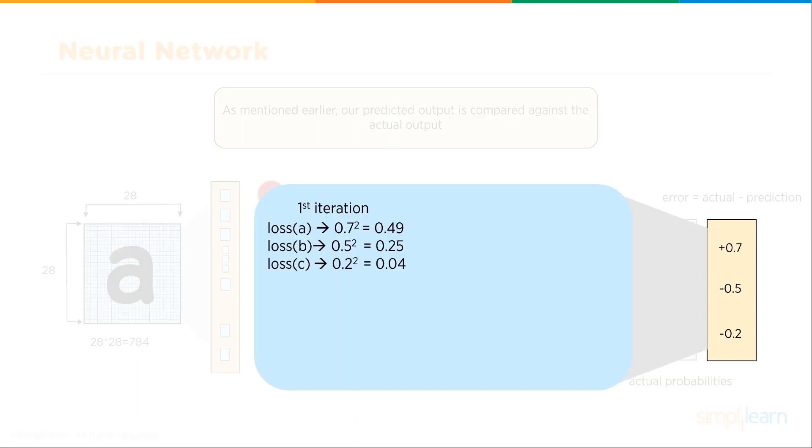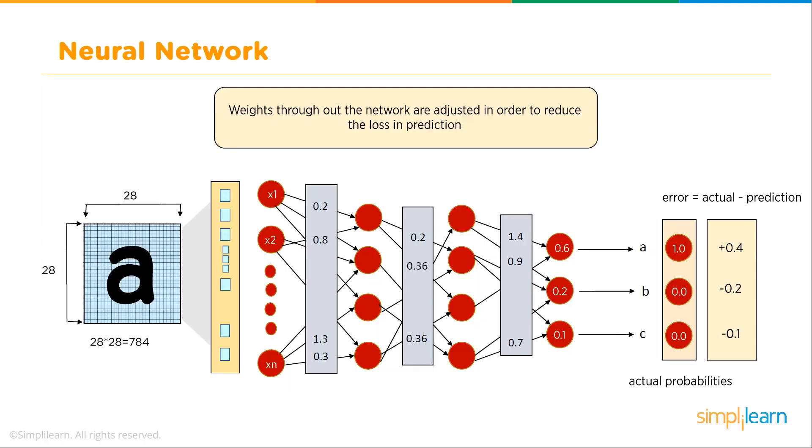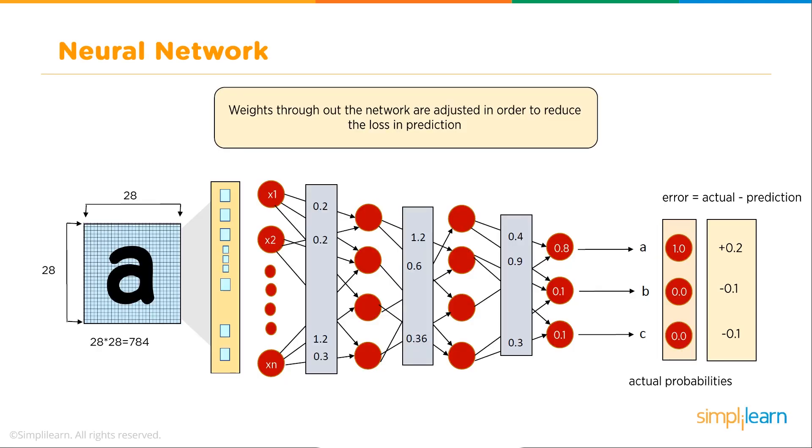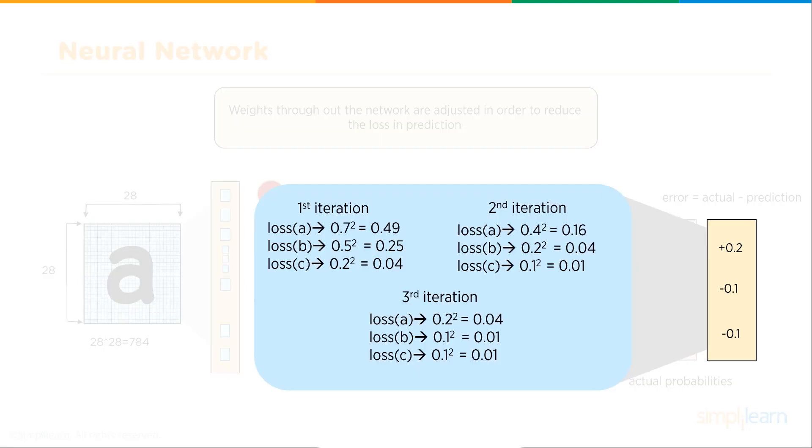As mentioned earlier, our predicted output is compared against the actual output. You can see our error over here, actual minus prediction. Then we compute our loss. The loss of A is 0.7 squared equals 0.49. Loss of B is 0.5 squared or 0.25 and so on. So now we have our first iteration.